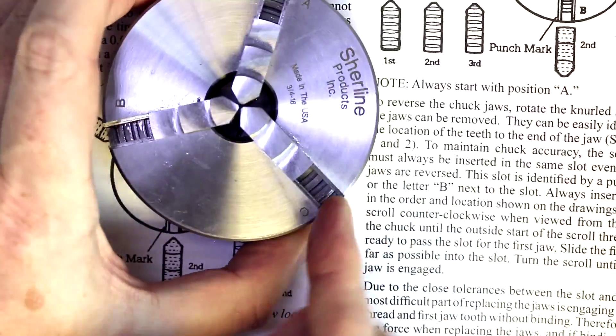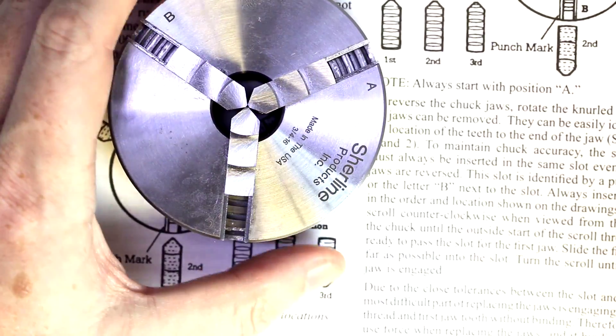And then last is the C jaw. Now go ahead and spin it down. And if we've put these in correctly, we'll see them come together at a point.